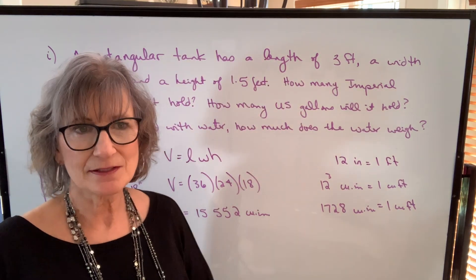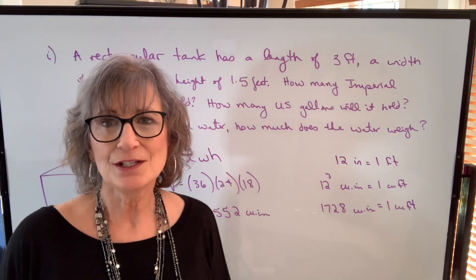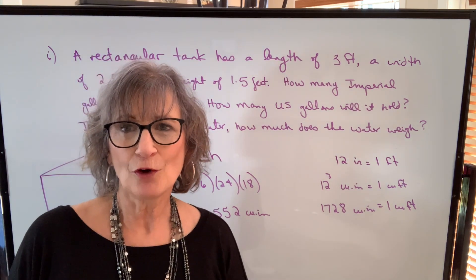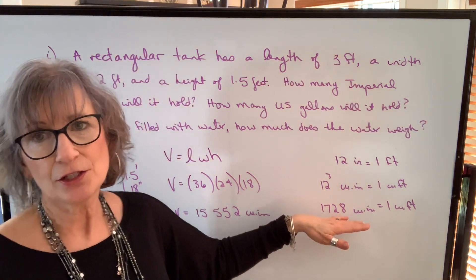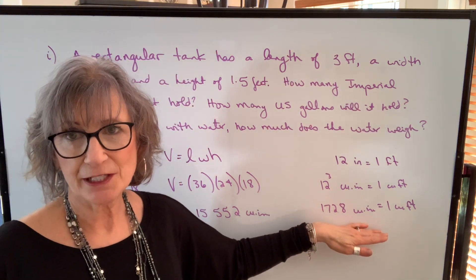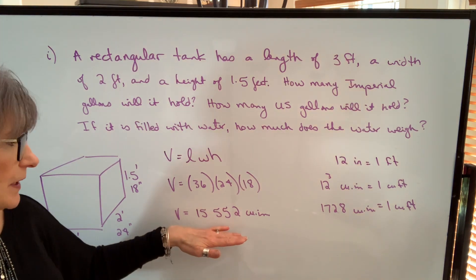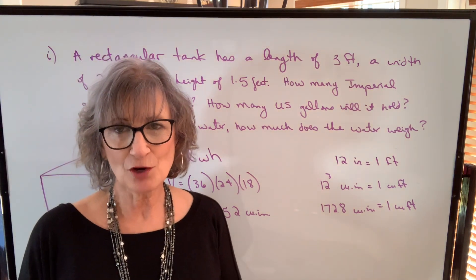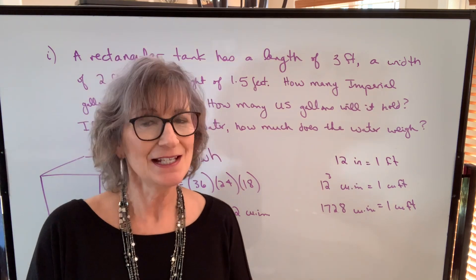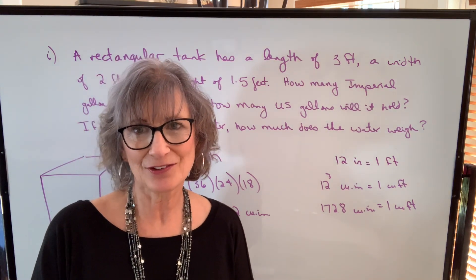People have trouble with that because they think I've just multiplied by 12. But remember, you have to multiply by 12 for each of the three dimensions. So we could have taken 9 cubic feet and multiplied by 1728. We would get 15,552 cubic inches that way as well. So just be careful when you're converting your volume units. It's not exactly the same as converting length units.